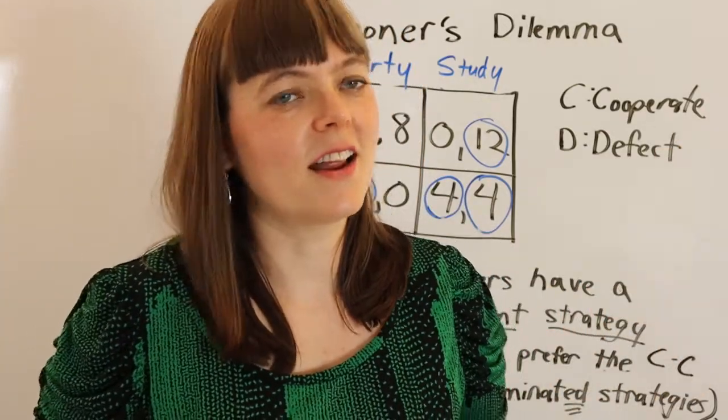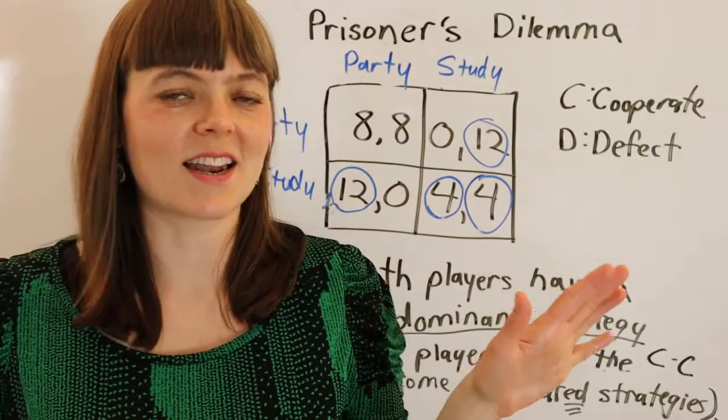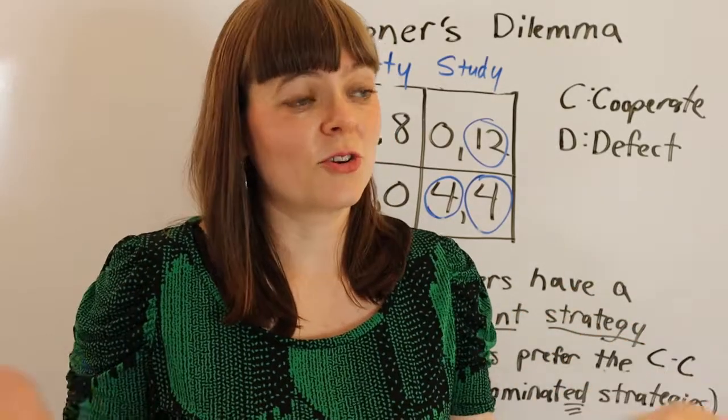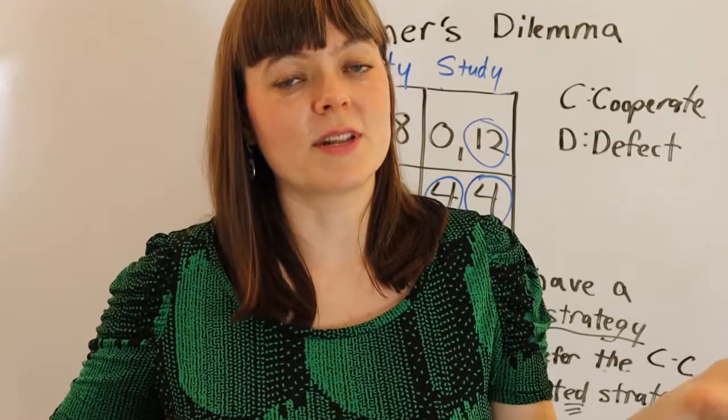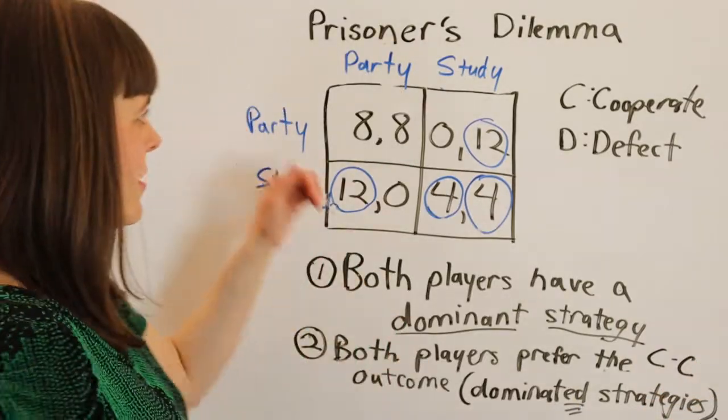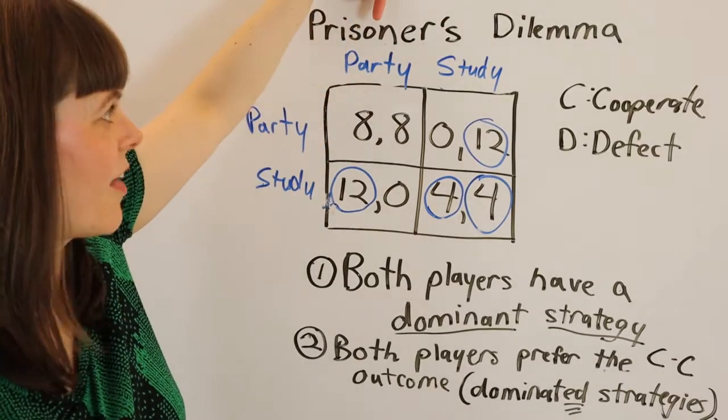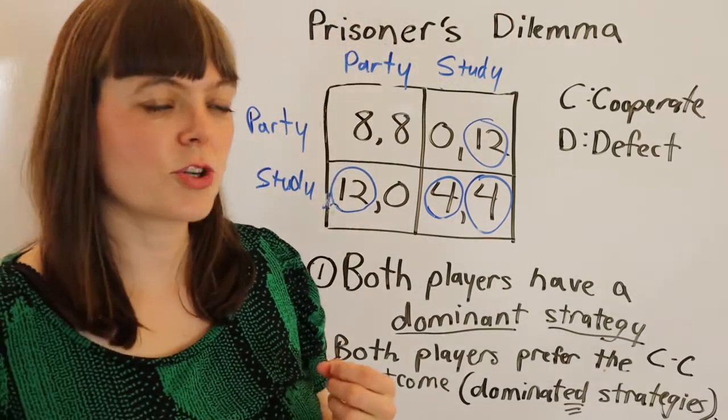So studying is a dominant strategy if the professor is grading by the curve. But, of course, the class would love to reach an equilibrium where nobody studied and they all just got the grade they wanted.